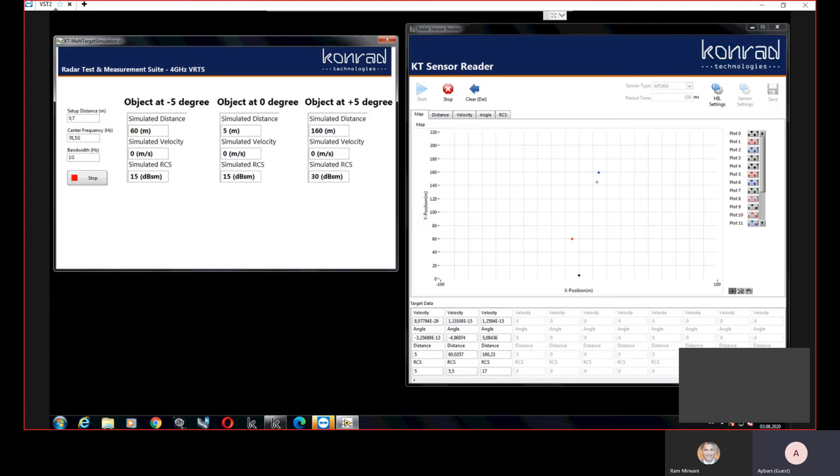Now I like to demonstrate how we can control our target simulation parameters dynamically such as distance, velocity and RCS value. In order to do that I would like to decrease my simulated distance for the object at plus five degree. Now I change my simulated distance to 100 meters and as you can see the corresponding response.